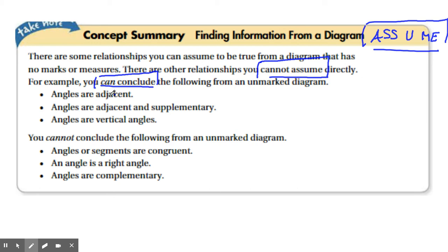Number one, angles are adjacent. Big whoop, I don't care. Number two, angles are adjacent and supplementary. That means that you can assume linear pairs based off of a picture. That's very important. And number three, angles are vertical angles.